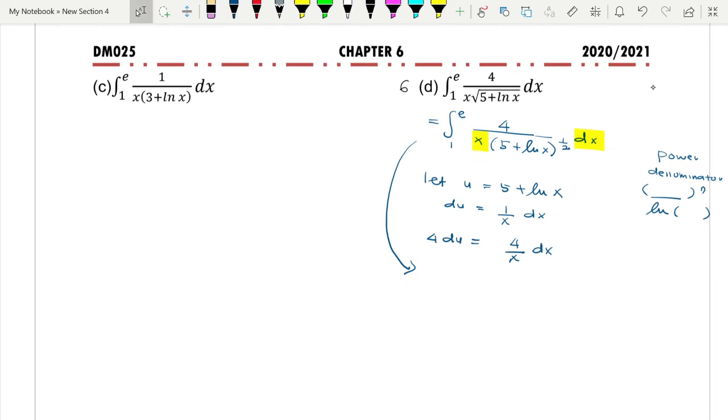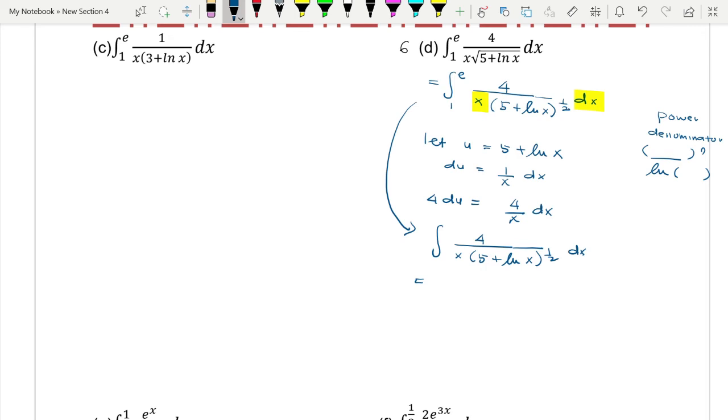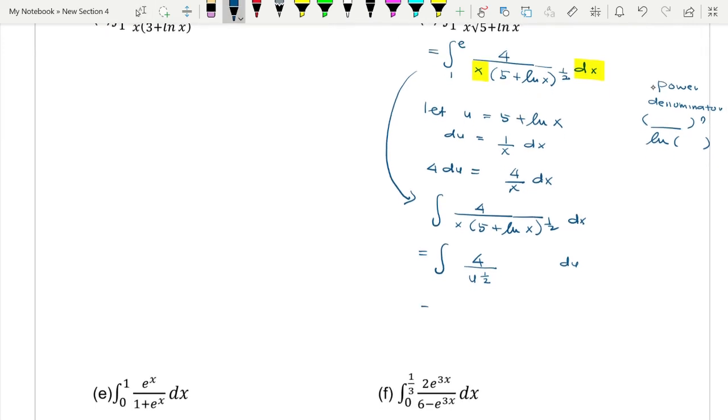Let us put the integral in terms of u. This is 4/x times (5 + ln x)^(1/2) dx. If you have definite integral but use the substitution method, make sure that you do indefinite integral first. So 4/x is 4du, this is u^(1/2). You simplify to get 4u^(-1/2) du.